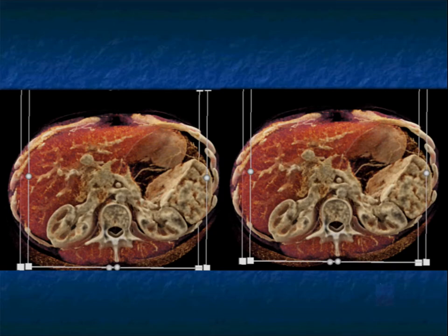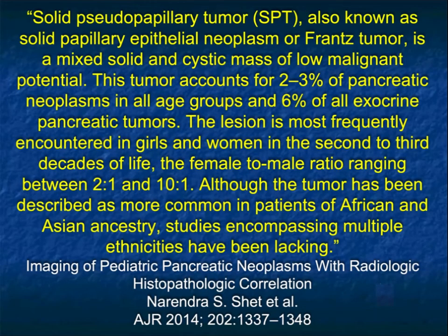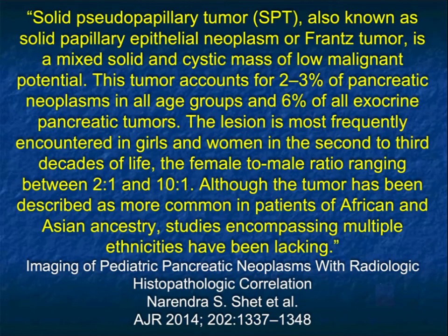Post-processing can be helpful, particularly when surgery is planned — mapping out the vessels and getting a better look at the tumor and its close relationship to arteries and veins. So, I've shown you a lifetime of SPNET tumors. They represent two to three percent of pancreatic neoplasms in all age groups, six percent of exocrine tumors, most frequently women or girls in the second and third decade, female-to-male ratio 10 to 1.